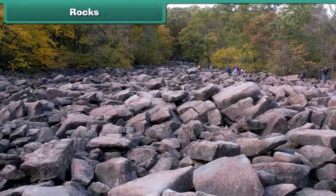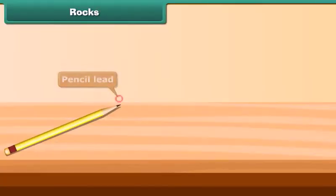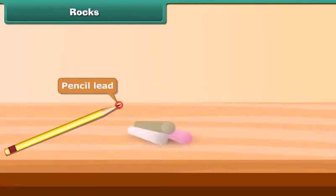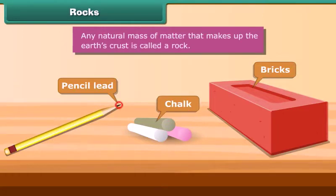Rocks are all around us. You can see rocks in your yard, on your street, on a road — everywhere you look. Pencil lead, chalk, and bricks are all rocks. Any natural mass of matter that makes up the earth's crust is called a rock.